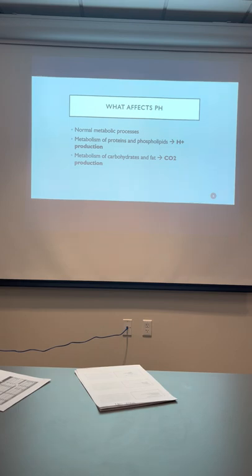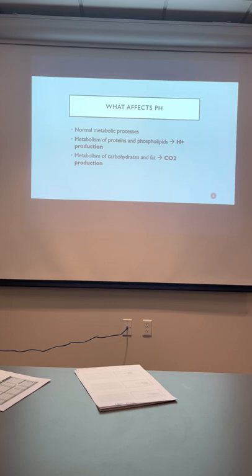If the PCO2 is 60 on a venous sample, that's significant. But if the PO2 on a venous blood gas is 60, you can't read into it. We're mostly only doing venous samples here, so the normals have already been designated on the EPOC — you can follow those.